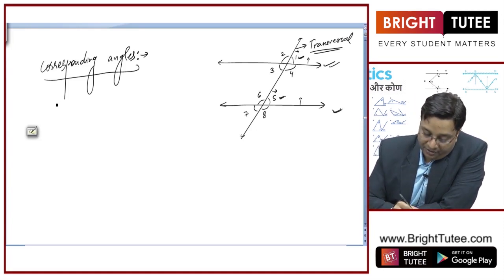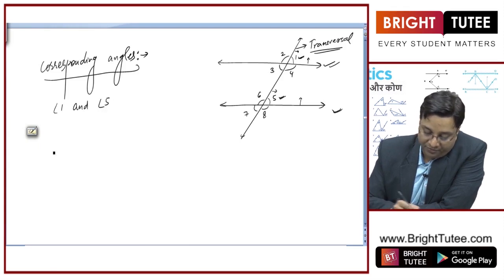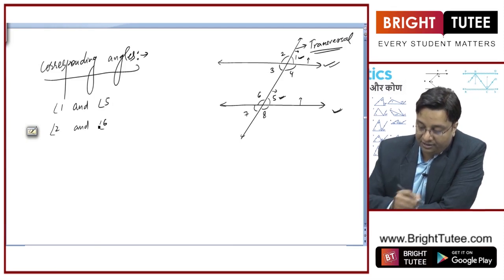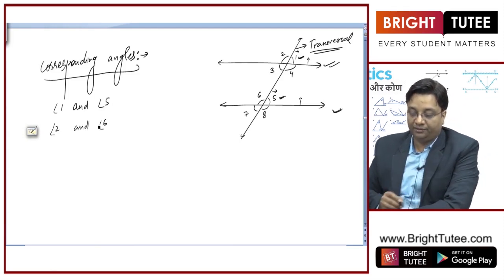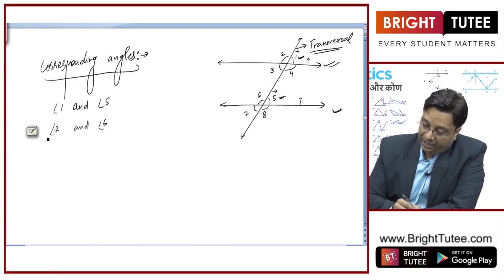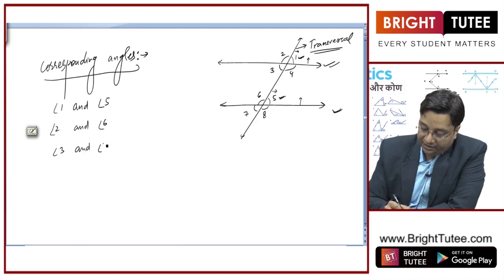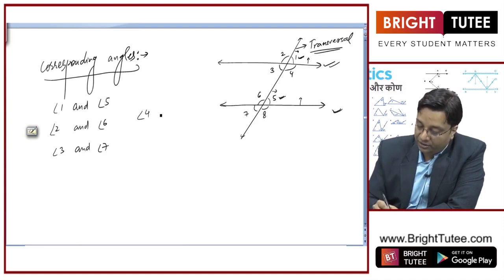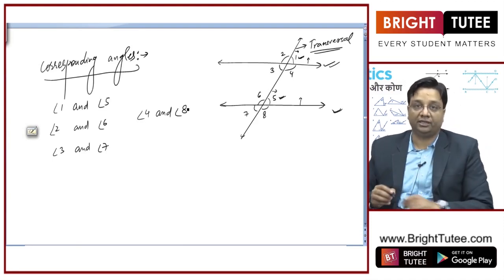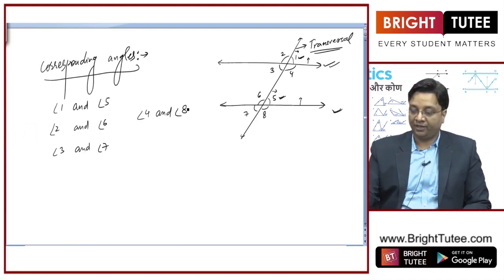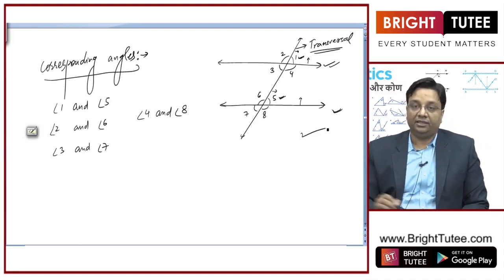Similarly, angle 2 and angle 6 are corresponding, angle 3 and angle 7 are corresponding angles, and angle 4 and angle 8 are corresponding angles. These are the corresponding angles in this case.